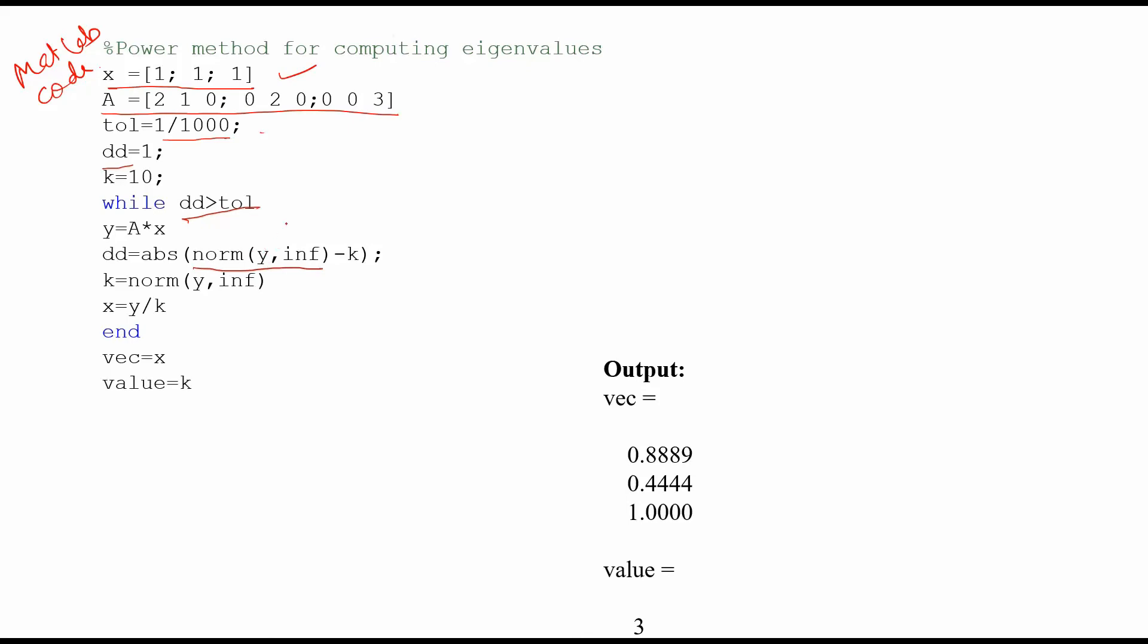And then it is subtracting with k. In the first step, this will be subtracted with 10. Then k equals norm of y infinity, meaning it is calculating the infinity norm of y and giving its value to k. Now x is updated. This is a new x. The first x was this, this was our initial x. And now x is updated by y by k.